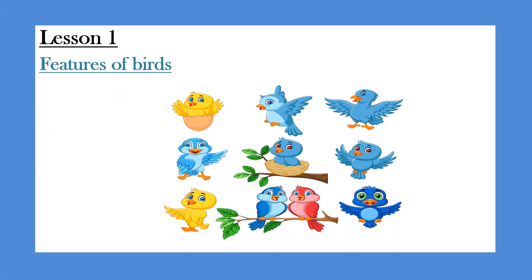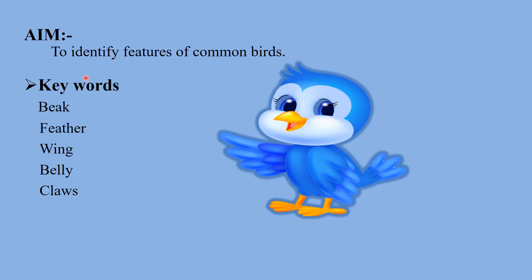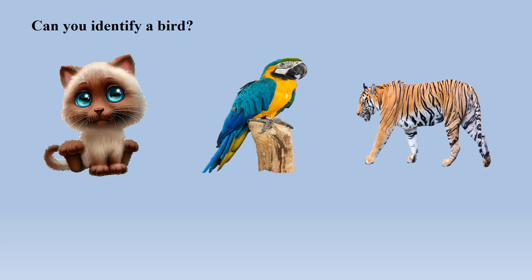Today we are going to learn about the features of birds. Our aim is to identify features of common birds. The keywords are: beak, feather, wing, belly, and claws. Look here children — can you identify a bird from these pictures? See the second picture — it is a bird, isn't it?